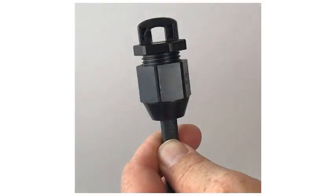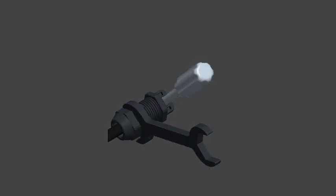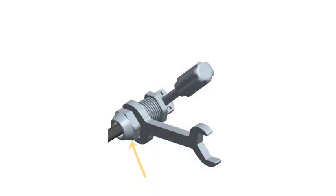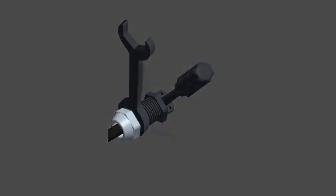Make sure that the hex nut is fully tightened. Hold the Terminator body stationary with the screwdriver and turn only the hex nut to prevent the conductors from twisting out of the separator. Be sure to only tighten the hex nut. Rotating the Terminator body could cause the conductors to back out past the internal separator.